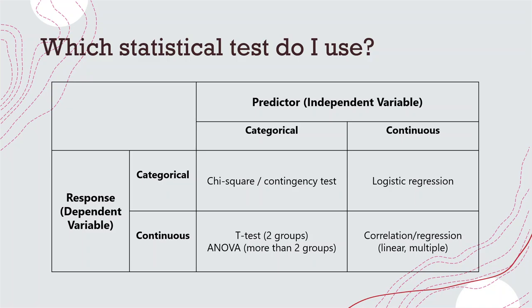Continuous variables are often our numeric variables — they do not have categories and range on a continuous numeric scale. Variables like height or weight are continuous. Thinking back on our penguins dataset, things like flipper length and beak width are continuous variables. In the case where we have a categorical predictor — a variable that is changing, such as island in the penguins dataset — and a response variable that is being affected by the change.